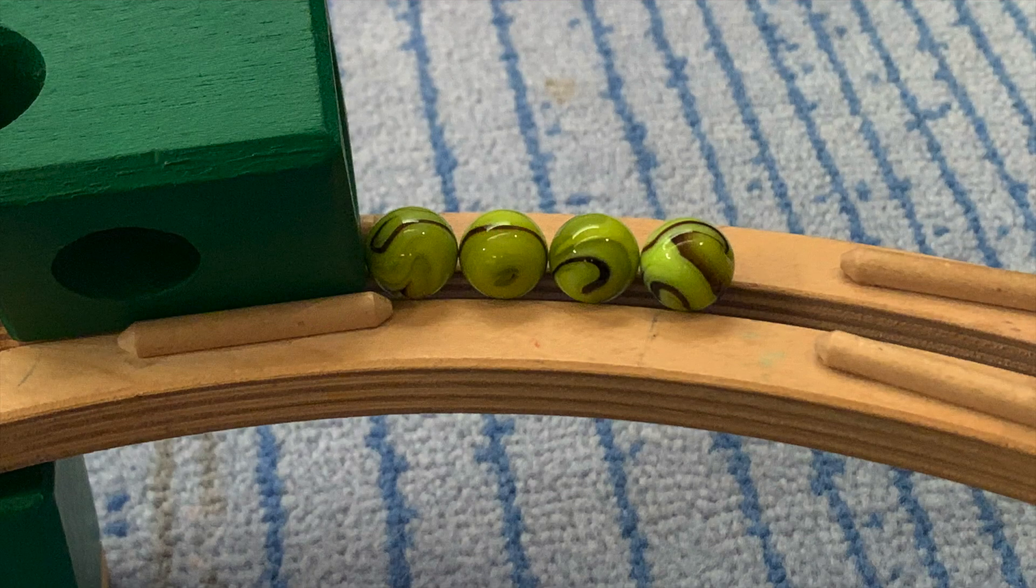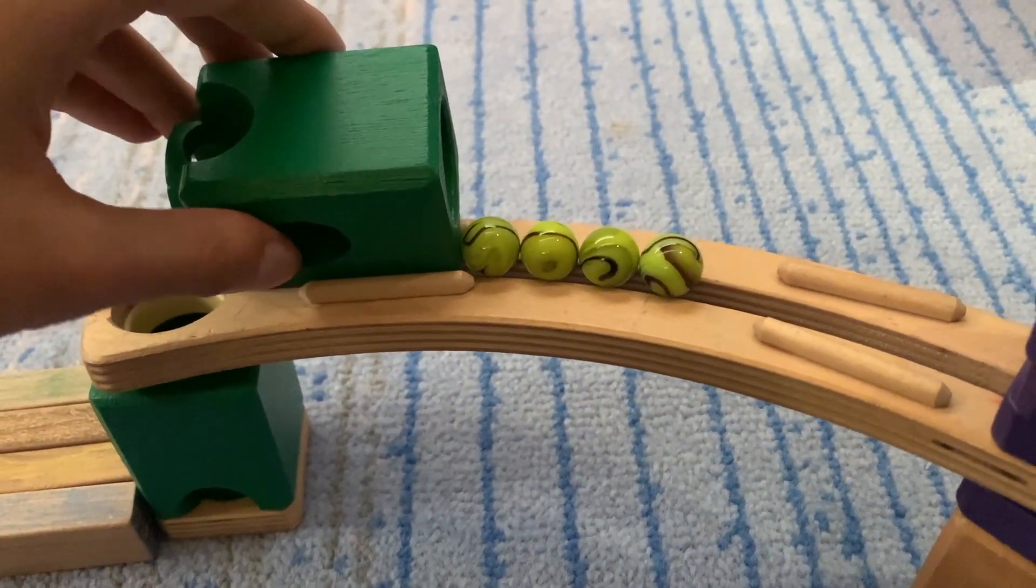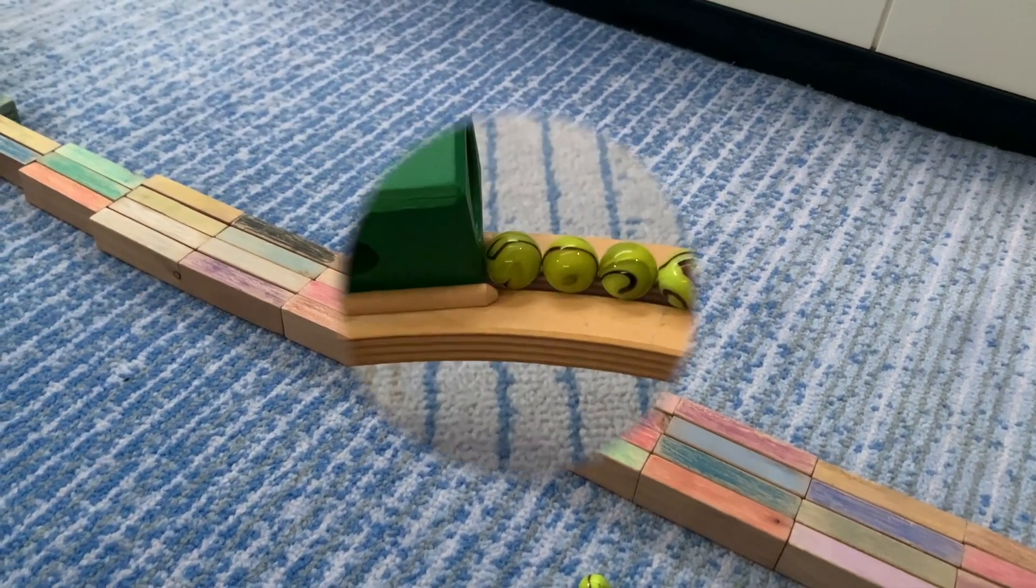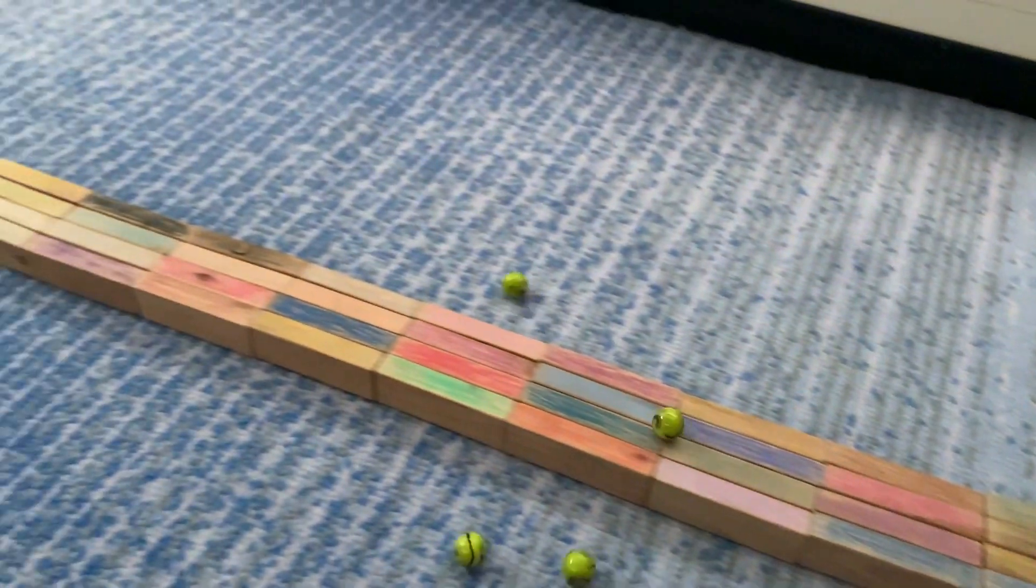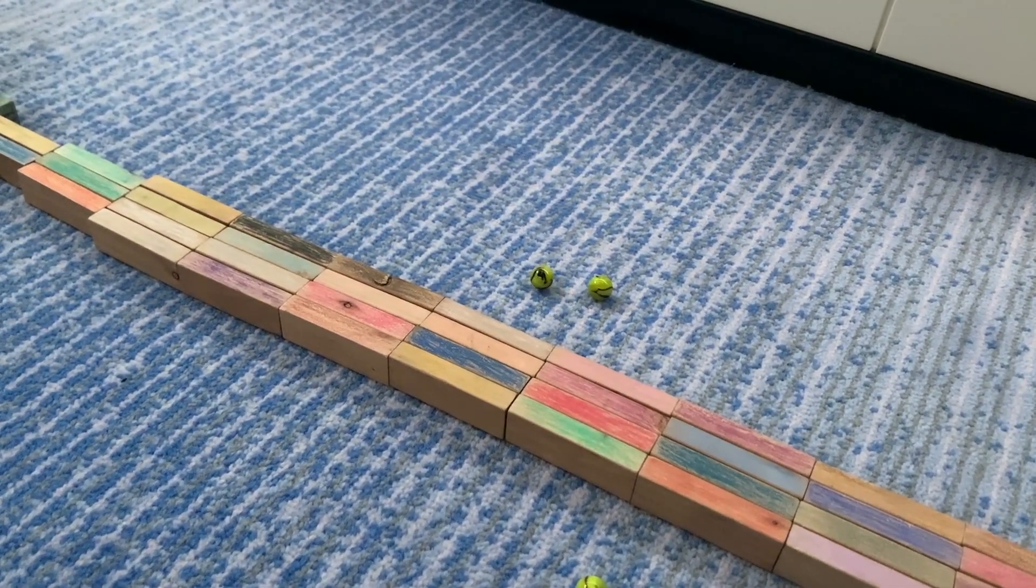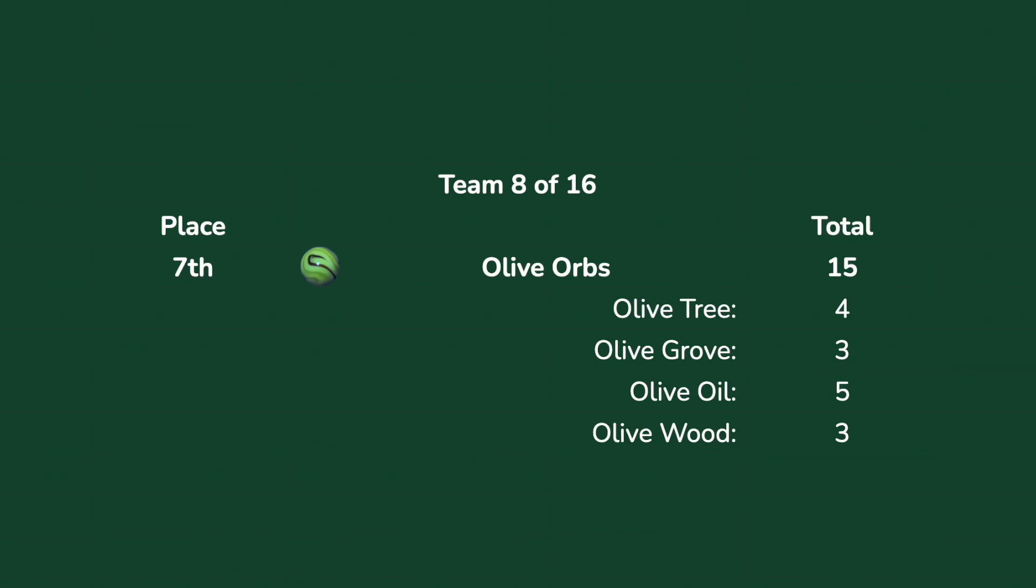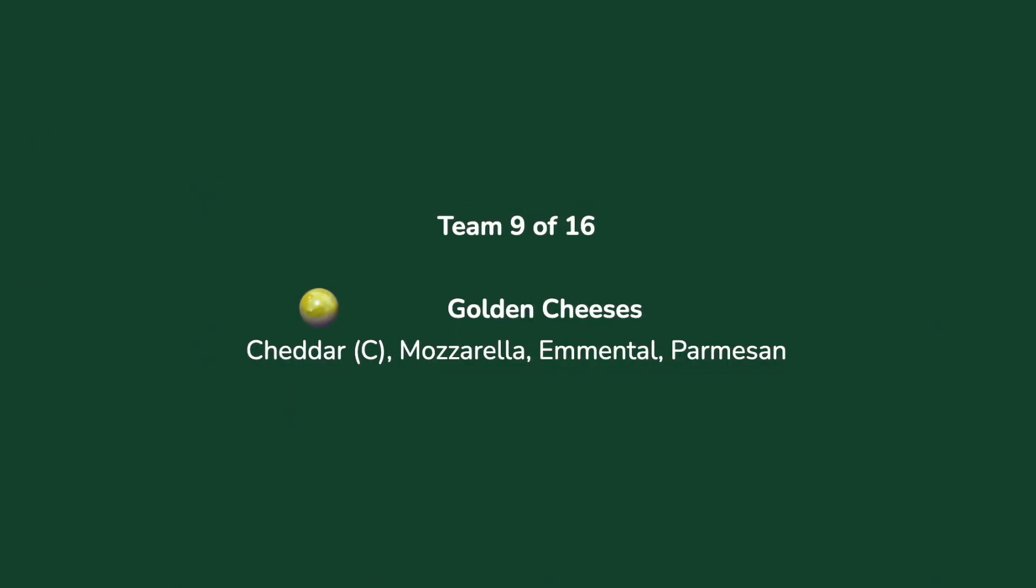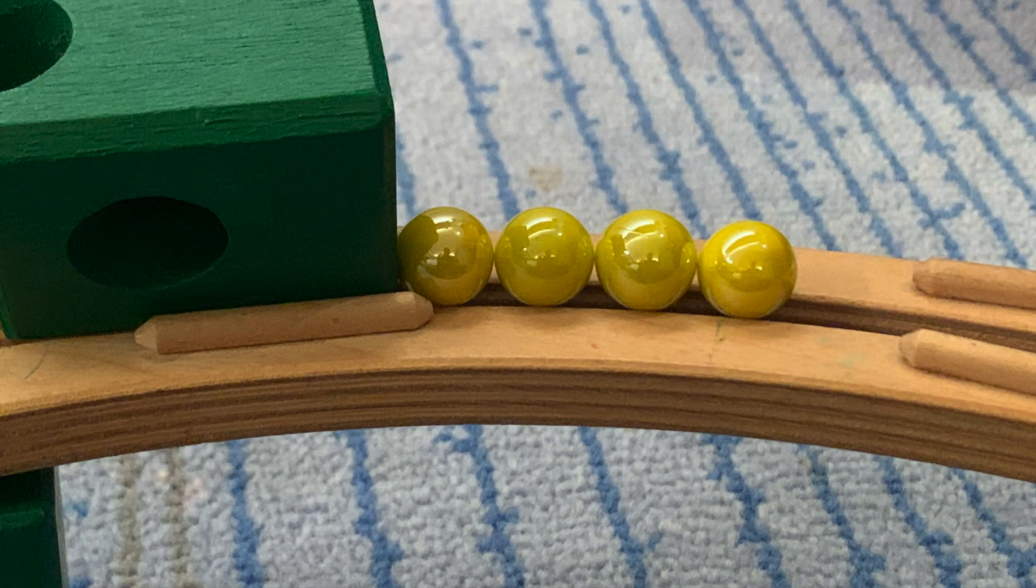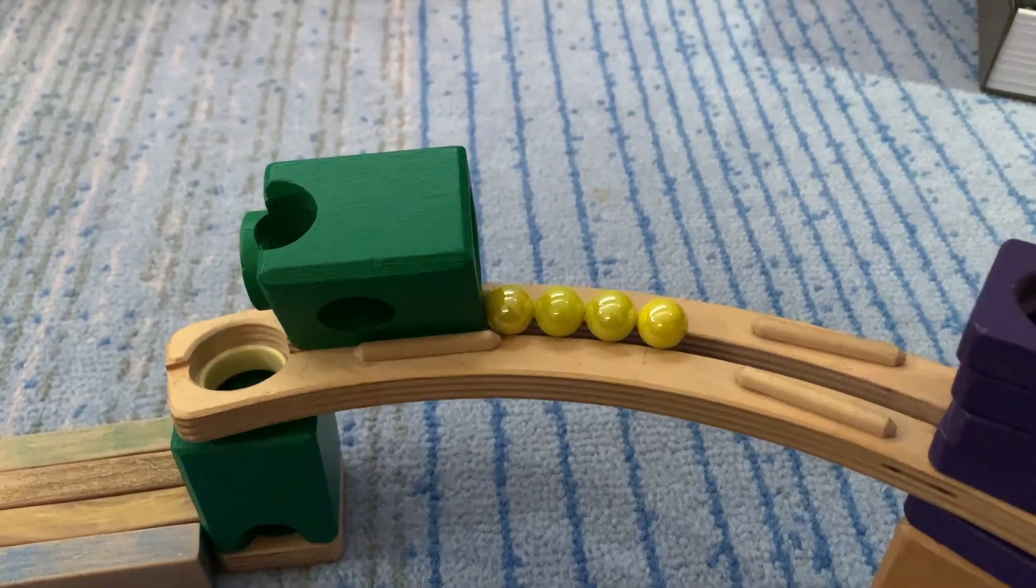Now to round out the first half of runs, the Olive Orbs, down in the order, poor outings in both the first two events. And it looks like it's going to be the same here. The Olive Orbs, what was that? Two of them, once again, to the near side. They seem to stay on a bit longer than Team Atlantic, and they do beat Team Atlantic, but they only get 15—that's tied with the Deep Divers, but the Deep Divers win based on the tiebreaker. But after the first half, it is the home team, the Slime Balls, with the lead, followed by the championship leaders, the Shadow Riders. Could the Slime Balls be on for another medal? They just need to hold. They can only have two teams beat them if they want to get a medal, maximum of two teams.